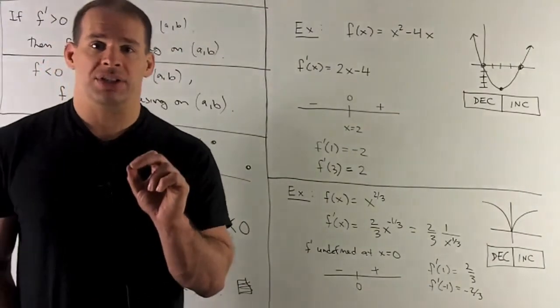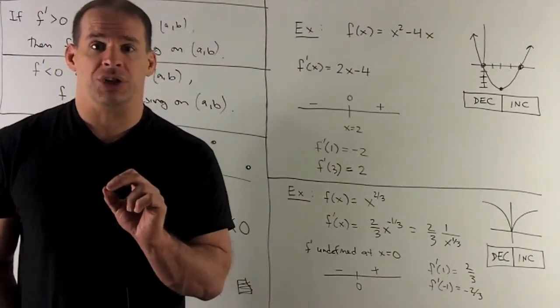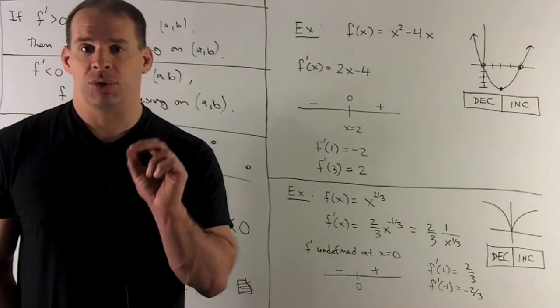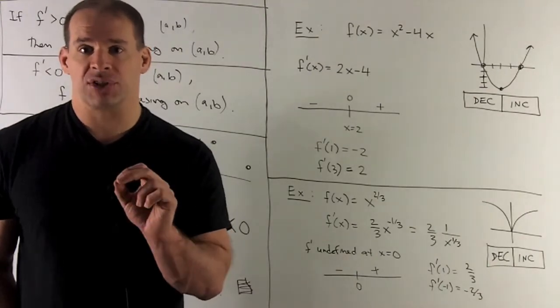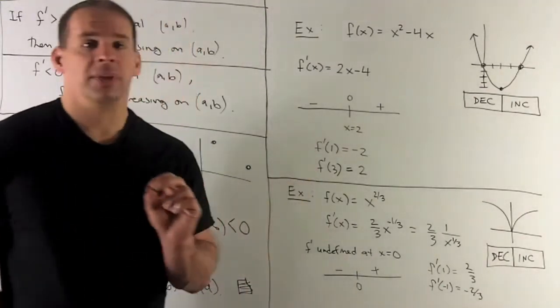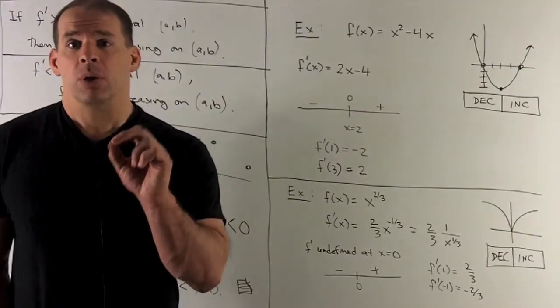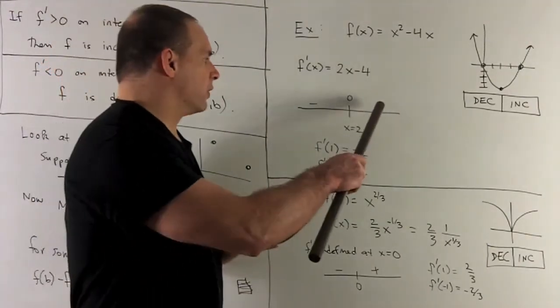Now I'll try points 1 and 3 for each region. If I put a 1 into my derivative, I'm going to get a minus 2. So I'm negative on this region. If I put 3 in, we're going to get a 2. So I'm going to be positive on this region.